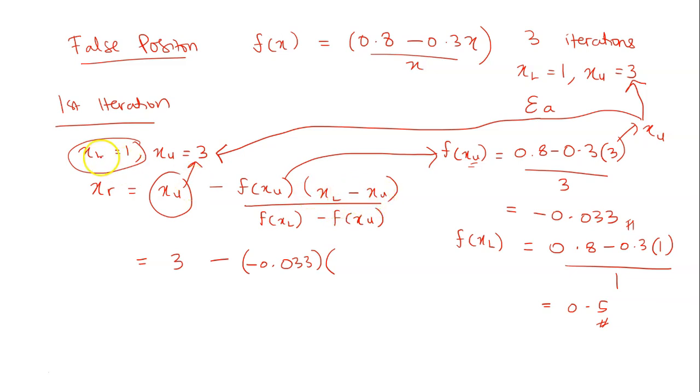So x_l here is 1 minus x_u is 3 minus 3 divided by f(x_l). This is your f(x_l). 0.5 minus x_u. This is your f(x_u). Negative 0.033. So you get your answer for x_r as 2.875.